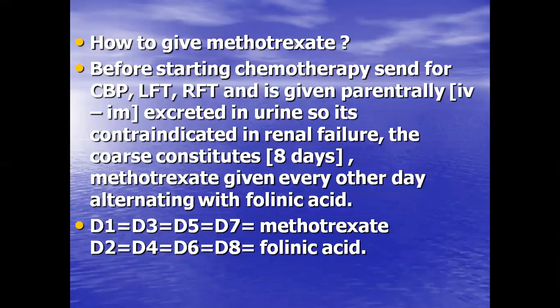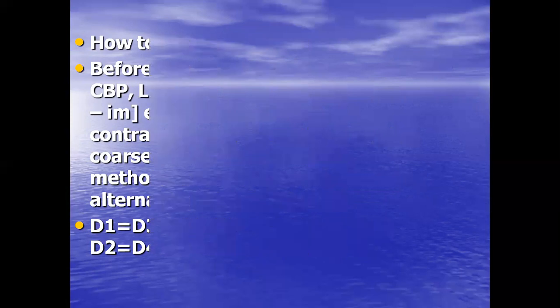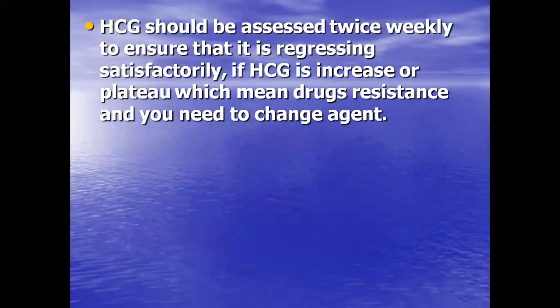Before starting chemotherapy with methotrexate, send the patient for complete blood picture, liver function test, and renal function test. It is given parenterally IV or IM and secreted in urine, so it is contraindicated in renal failure. The course constitutes eight days — methotrexate is given every other day alternating with folinic acid. HCG should be assessed twice weekly to ensure regression.